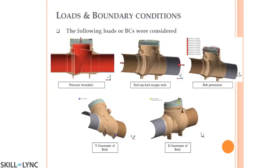Regarding boundary conditions and loads: a pressure boundary condition is applied on the red surfaces, which are the regions seeing pressure. There are end loads acting at the ends of the pipes, given as forces. Some bolt pretension is applied on top. To fix the geometry, all three planes need to be constrained. Taking half symmetry means the XY plane is already arrested. The valve is constrained so it cannot move in the vertical direction, and also fixed at the pipe ends.